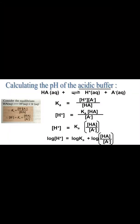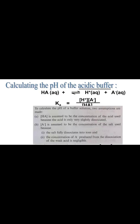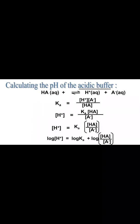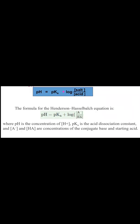Let's consider the equilibrium of the weak acid, labelled as HA. To calculate the pH of buffer solutions, two assumptions are made. In general, for any acidic buffer solution, we have a specific formula for calculating pH.